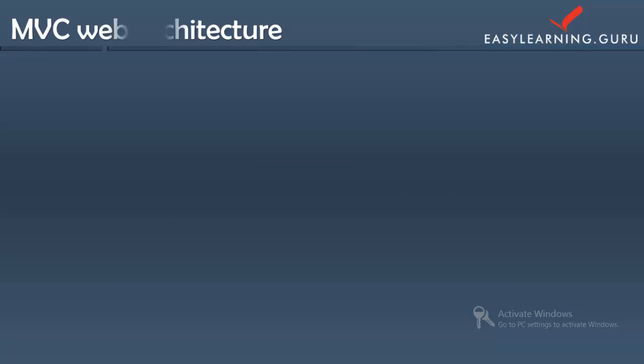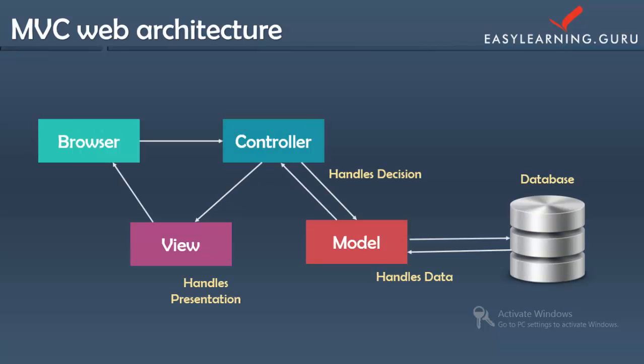On the other hand, the MVC architecture mainly breaks that single page up by function. The browser communicates to the controller, which contains only the code involved in making decisions about what should happen based on that browser request. Then, if we need to interact with the database, the controller will talk to our model, and our model will hold all the code related to our data and to connecting to the database. The model will return its results back to the controller.